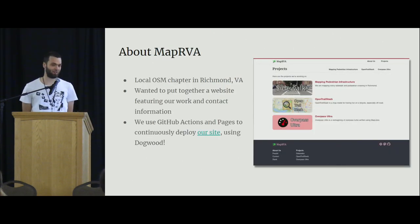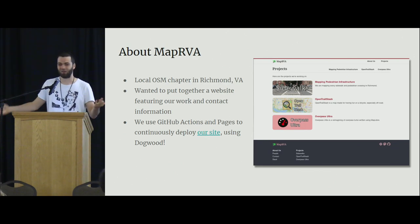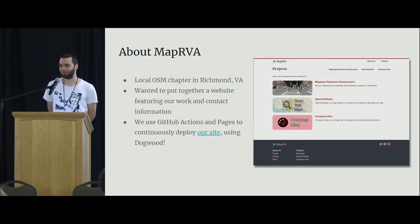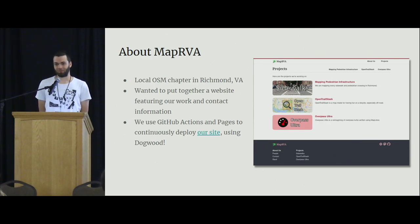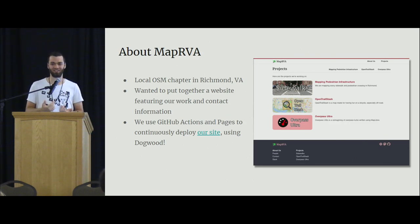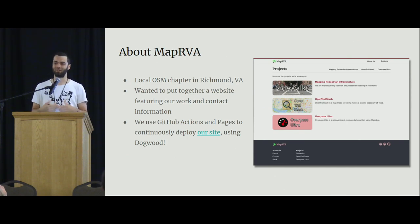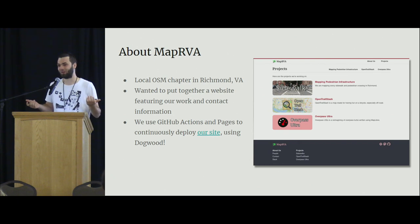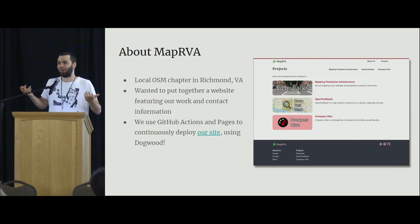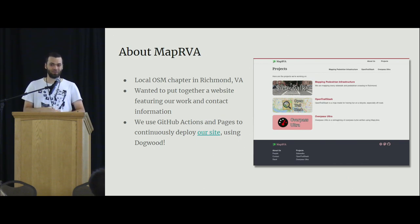I want to tell you a little bit about our community, because that's why we started getting into Dogwood. I'm a part of MapRVA. It's kind of exciting for us because we created MapRVA just after the State of the Map last year in Richmond. We all started looking at each other — I bet there's a lot of folks here in Salt Lake who feel similarly — where a lot of us who came to this conference all live in the same place and we're all really into OpenStreetMap.